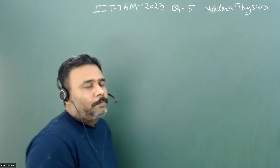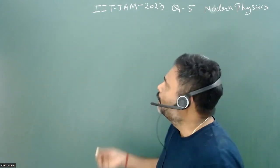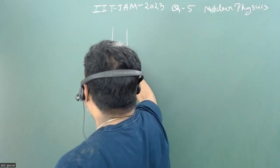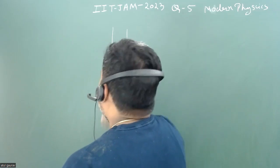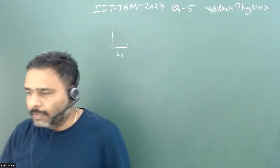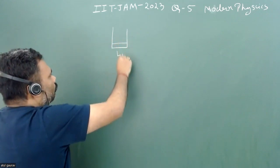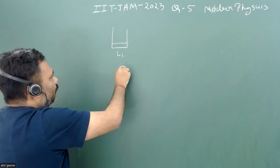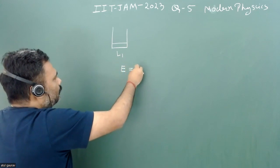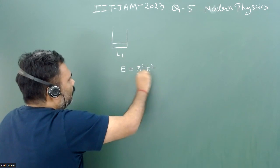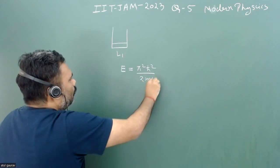There is a particle in a one-dimensional box of width L1. The mass of the particle is M and the particle is in ground state. The energy of ground state E is given as π² ℏ² / (2mL1²).